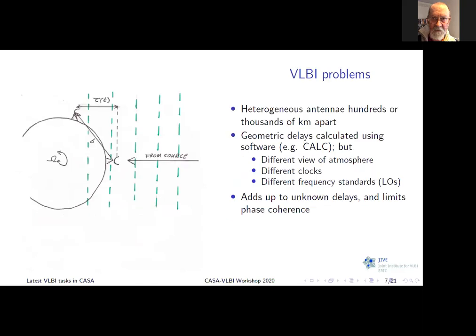In VLBI it gets much worse, because you have the Earth rotating and two antennas in different places, still trying to do the same thing. We have a programme called CALC that tries to handle this, bearing in mind ocean loading, plate tectonics, and atmospheres as best it can. But fundamentally, you're now using different clocks at different stations and different local oscillators, so your frequency standard is different. That means there's a residual degree of uncertainty you don't know a priori when calibrating the data, and that's what fringe fitting is designed to deal with.